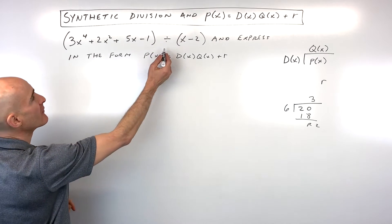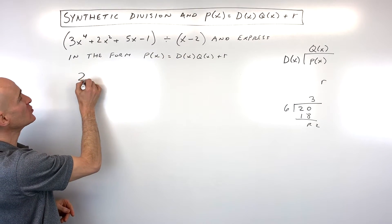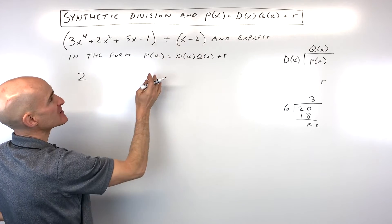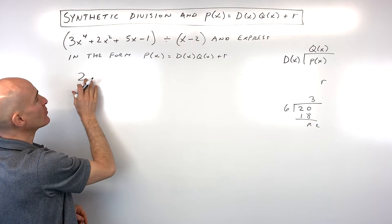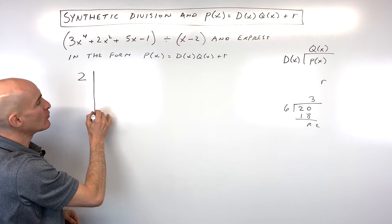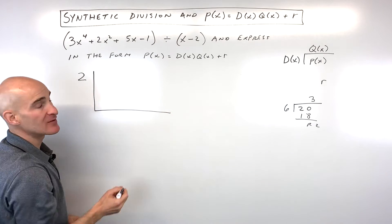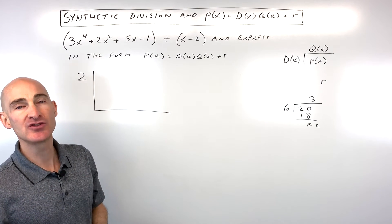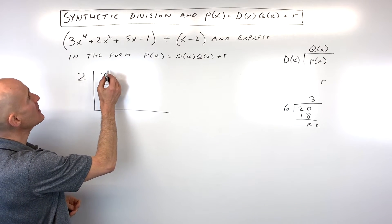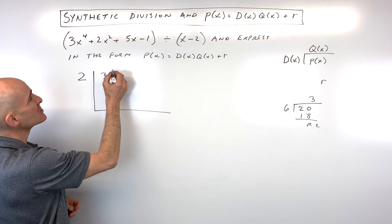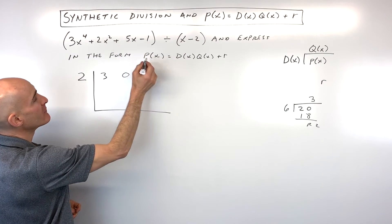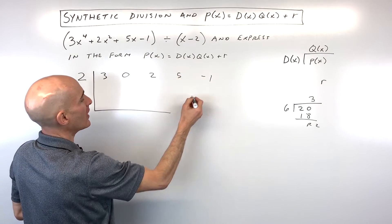We're dividing by x minus 2. When you do the synthetic division, you take the opposite sign, so if it's x minus 2 you put positive 2, and if it's x plus 2 you put negative 2. If you want to see more about synthetic division, I'll put a link in the description. We've got 3x to the 4th, 0x cubed, 2x squared, 5x, and negative 1.